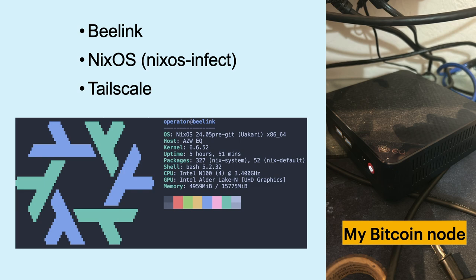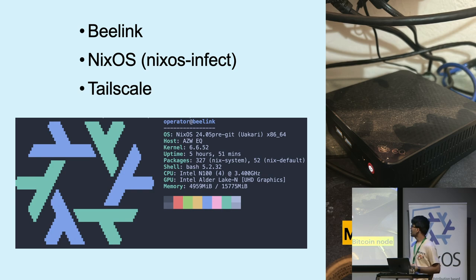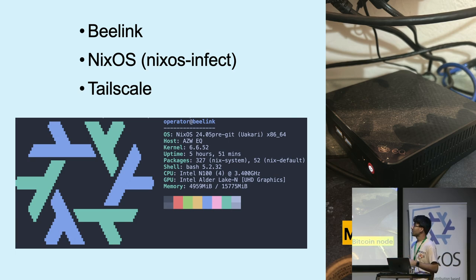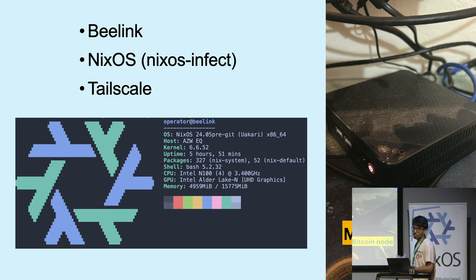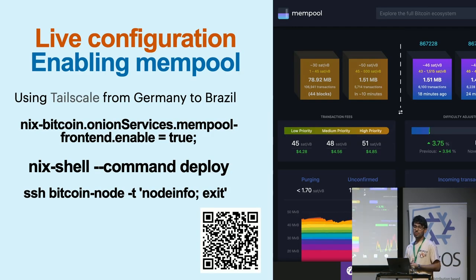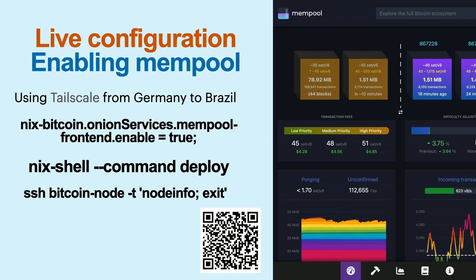I set up that mini PC using NixOS in-place, because I think it's simpler. I had Ubuntu installed and with one command I changed it to NixOS — that's a small spoiler for tomorrow's NixOS presentation. I'm using Tailscale to connect to that computer. I will do a live configuration enabling the mempool — the mempool is that website where you can see every block and every transaction that happened on Bitcoin. I will do it using Tailscale.